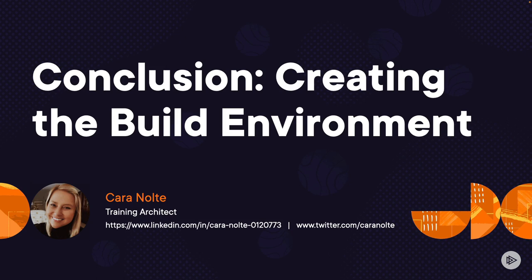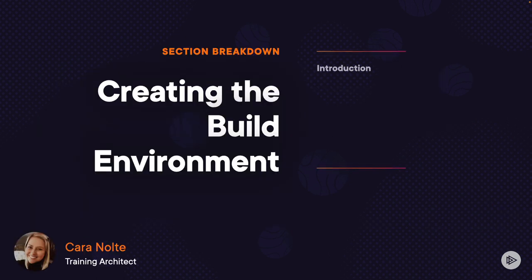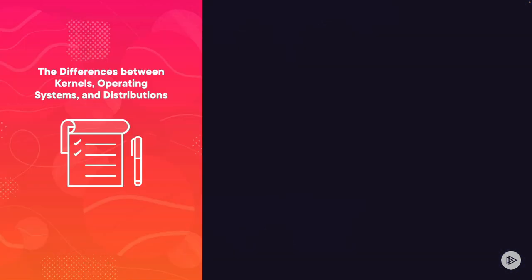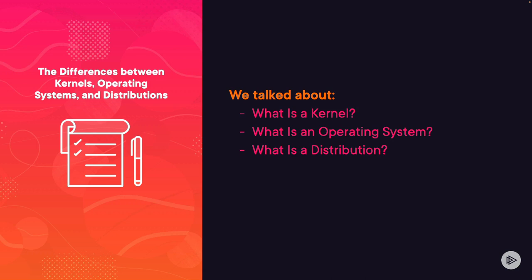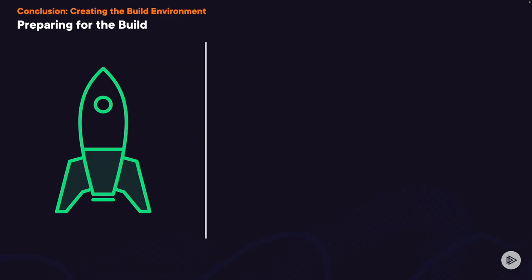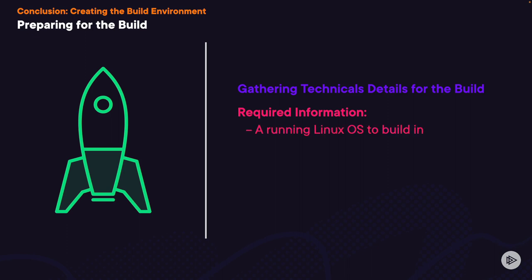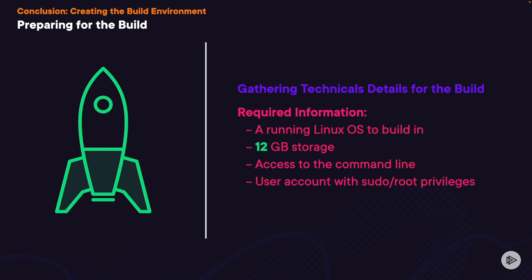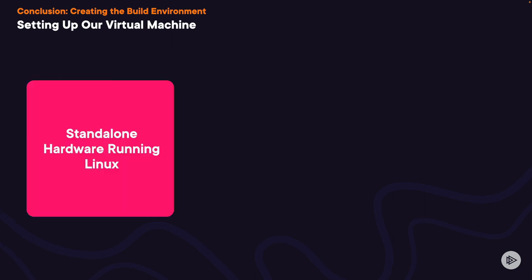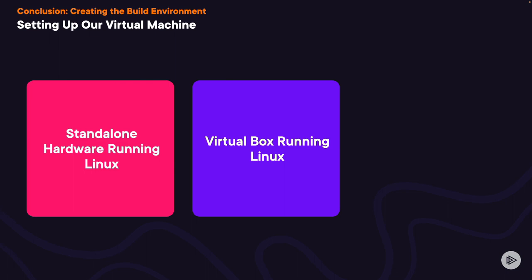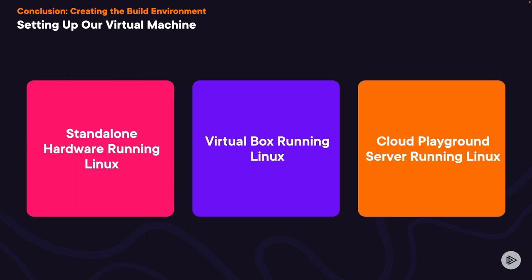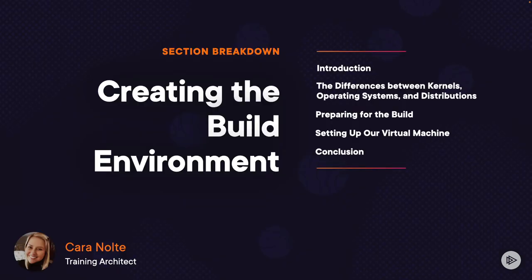Hello, and welcome back. In this section on creating the build environment, we started with a brief introduction, then talked about the differences between kernels, operating systems, and distributions — including what each is and how Linux is all three. Then we talked about preparing for the build: needing a running Linux OS, 12GB of storage, and command line access with sudo privileges. We also talked about setting up our virtual machine using standalone hardware, VirtualBox, or Cloud Playground. Go ahead and mark this lesson complete, and I'll see you in the next section.